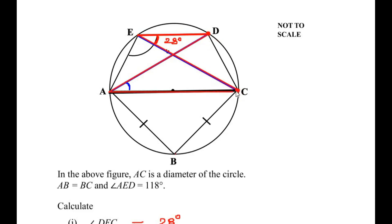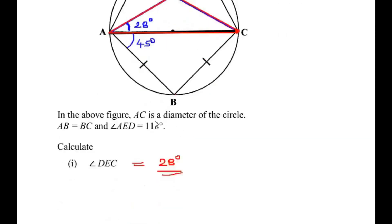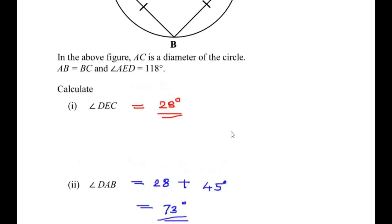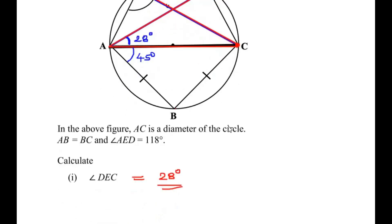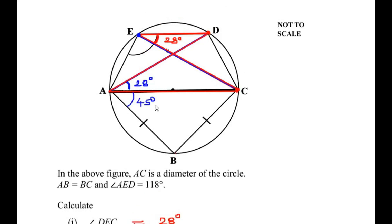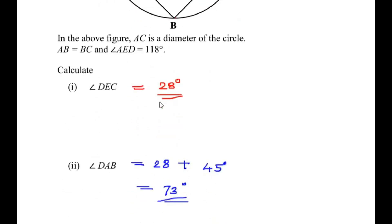Points D and C make angles in the major segment at point E and at point A. We calculated angle DEC in part one as 28 degrees. Using the angles in the same segment theorem, angle DAC is also 28 degrees. We found angle BAC as 45 degrees, so the total angle DAB is 28 plus 45, which gives us 73 degrees. In part one we used the angles in a semicircle theorem, and for part two we used both the angles in a semicircle and angles in the same segment theorems. I hope you understood all the steps — like, share, and subscribe to my channel. Thank you for watching.